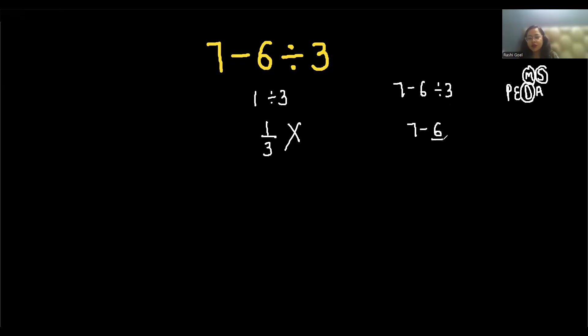So 7 minus 6 by 3. 6 by 3 is 2, and 7 minus 2 is 5. So what is the correct answer? 5.